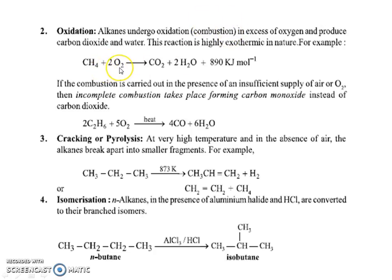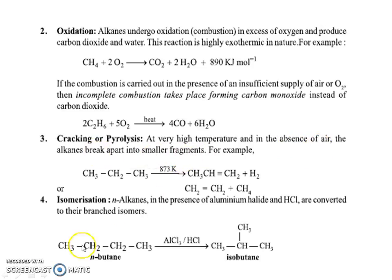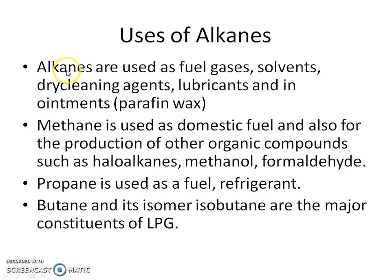Oxidation, also known as combustion: in the presence of excess oxygen, alkanes react and produce carbon dioxide and a large amount of energy. Cracking and pyrolysis: at very high temperatures in the absence of air, alkanes break apart into smaller fragments. Isomerization: in the presence of AlCl₃, alkanes get isomerized.